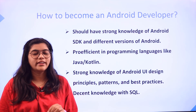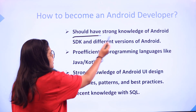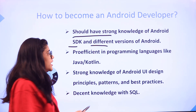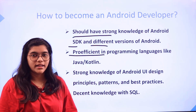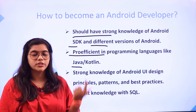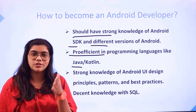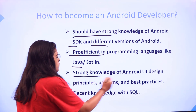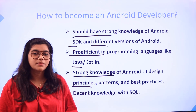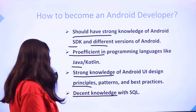If you are interested in becoming an Android developer, here are the key points. You should have strong knowledge of Android SDK and its different versions, and be proficient in programming languages like Java or Kotlin. You should know how to program and implement the language while maintaining a balance in your design. You also need strong knowledge of Android UI design principles, patterns, and practices, as well as knowledge of SQL.